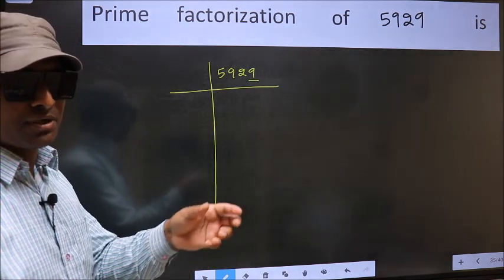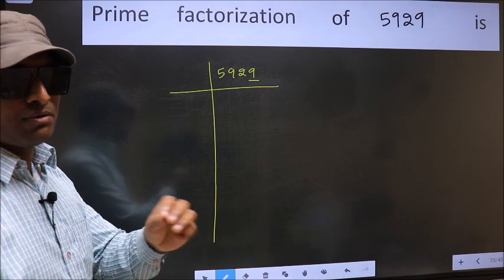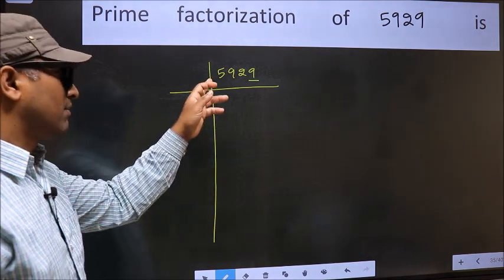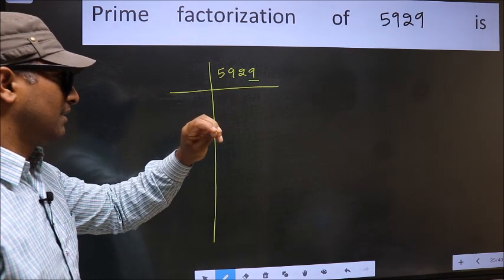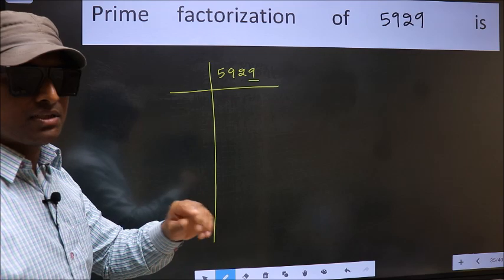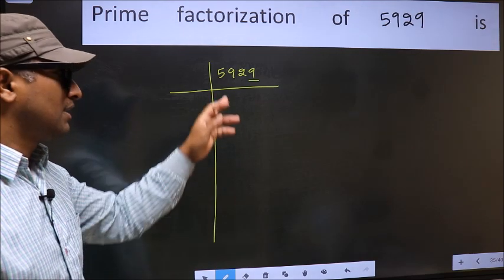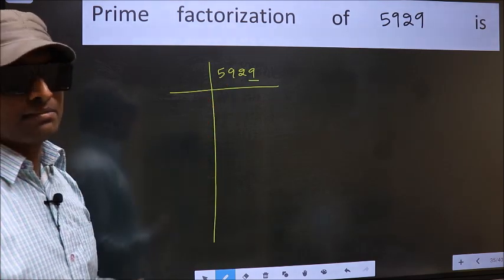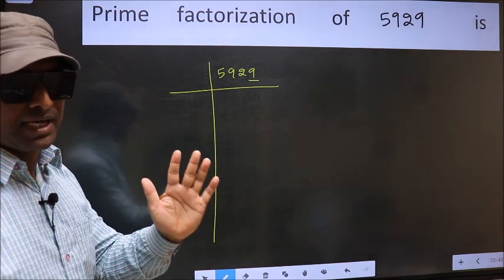For that we should add the digits. What I mean is 5 plus 9 plus 2 plus 9. We get 25. And 25 is not divisible by 3, so this number is also not divisible by 3. Next Prime Number 5.